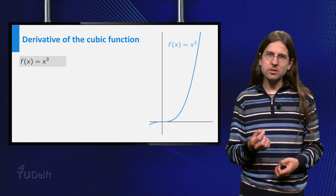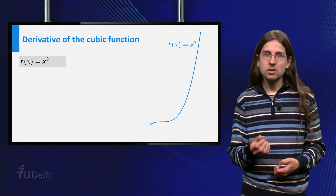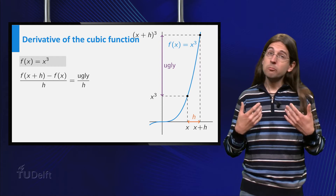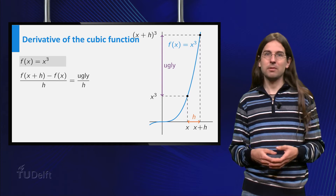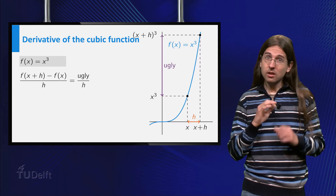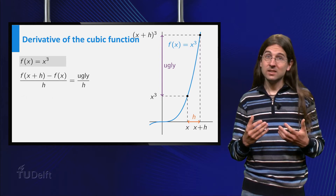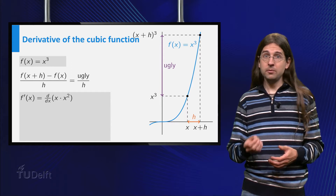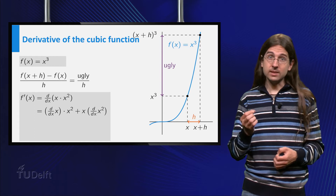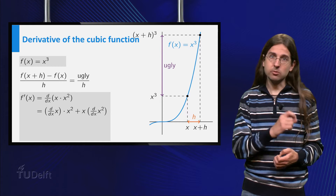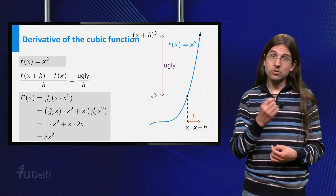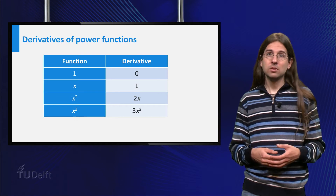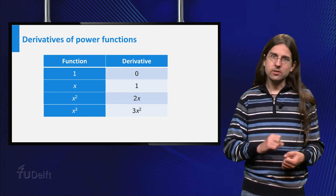Using the definition becomes more work if you want to calculate the difference quotient for f equals x cubed — you have to expand x plus h to the power 3. Instead, we are going to use a smart shortcut: the product rule on x cubed equals x times x squared. Thus the derivative of x cubed equals the derivative of x times x squared plus x times the derivative of x squared, which is x squared plus 2x squared equals 3x squared. Putting this result in a new row of our table, the pattern becomes clearer, but let us do one more case to test whether it still holds up.